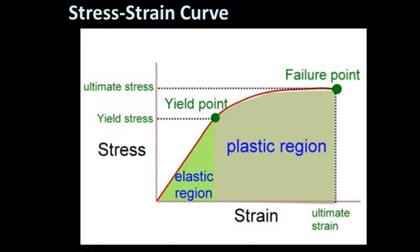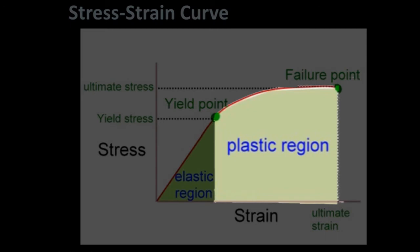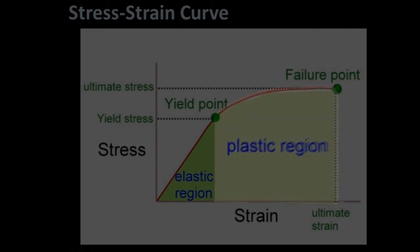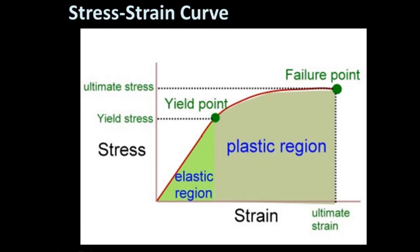After this point is passed, the material enters an area of the stress-strain curve called the plastic region, where you will see permanent material deformation. Eventually, if enough stress is applied, the material will break or fail. This point on the stress-strain curve is called the failure point.